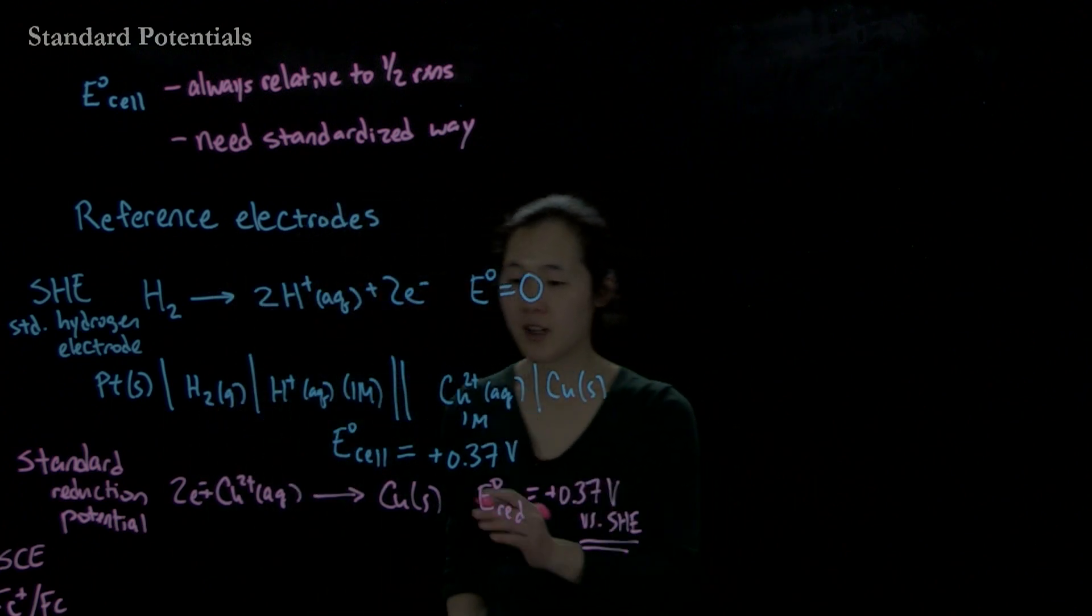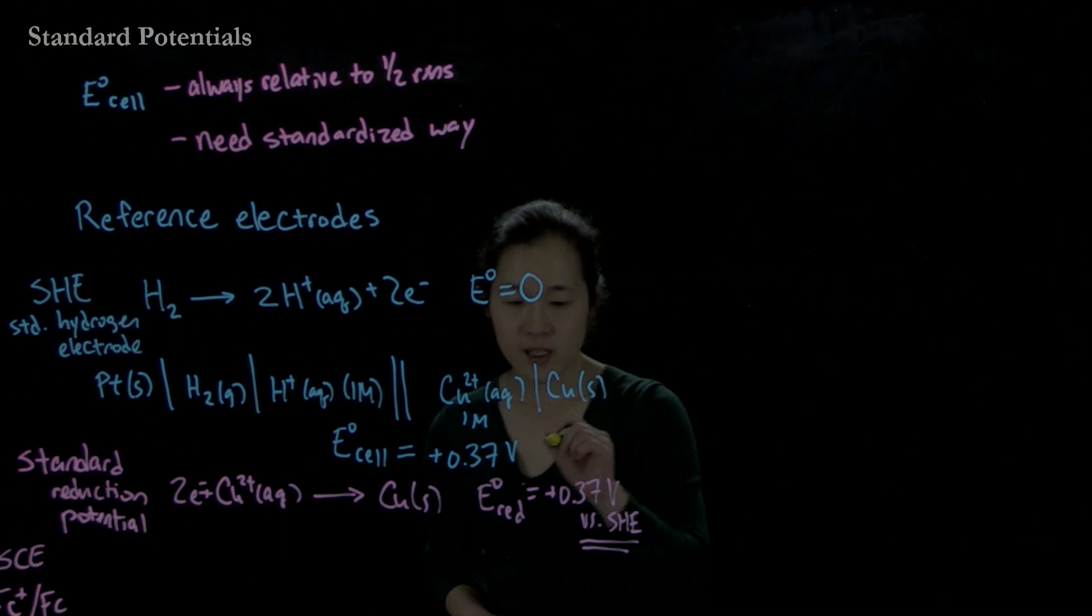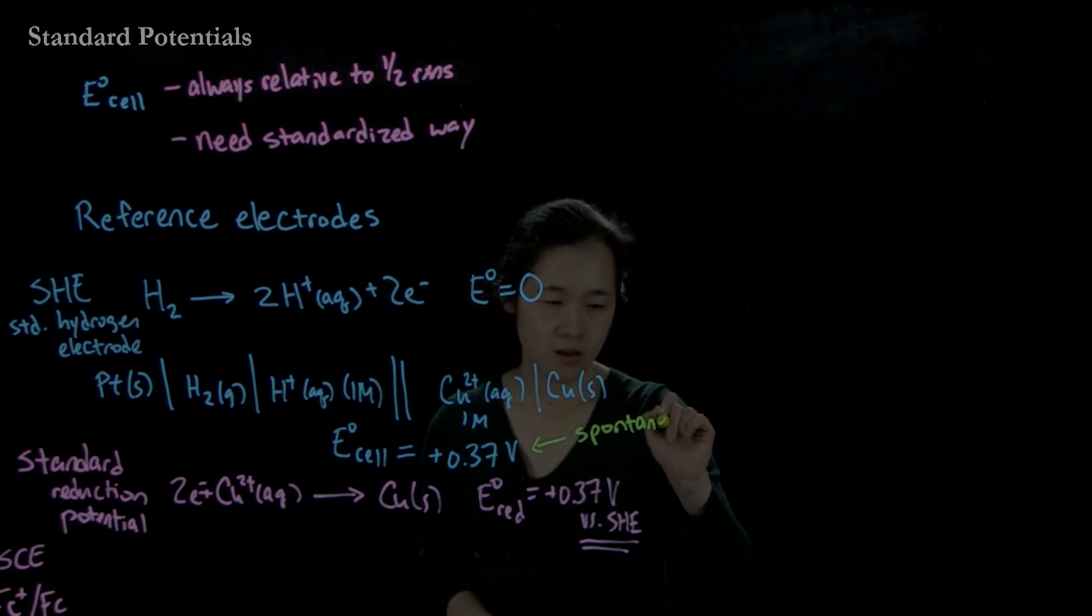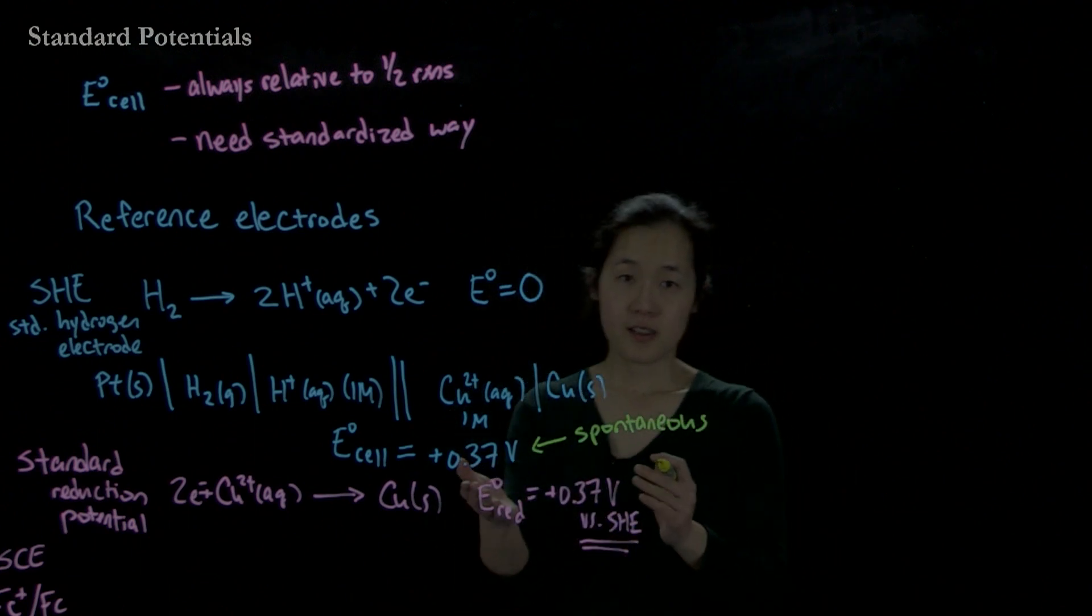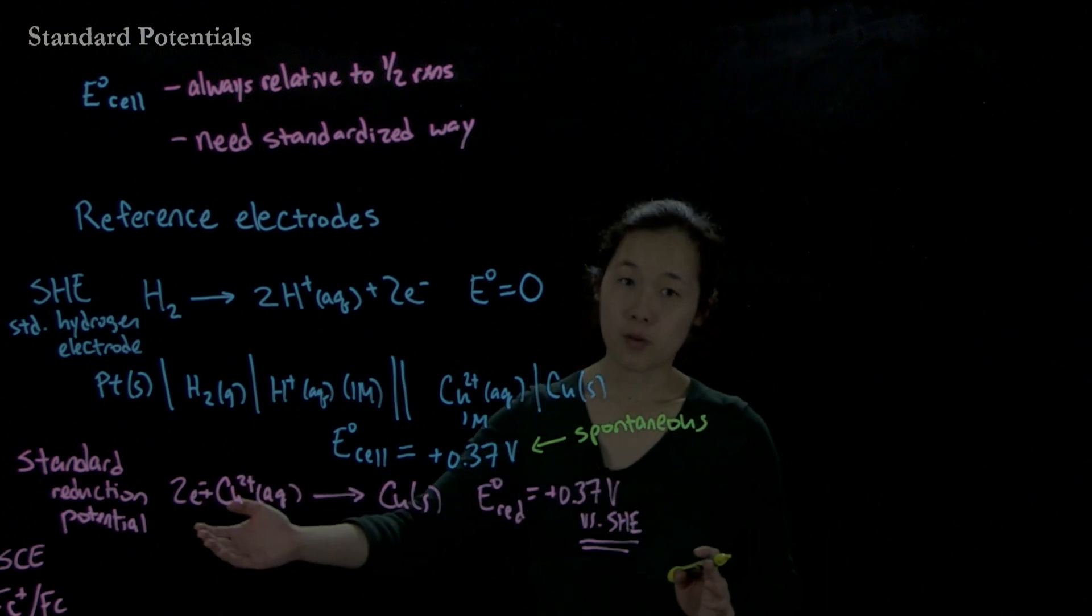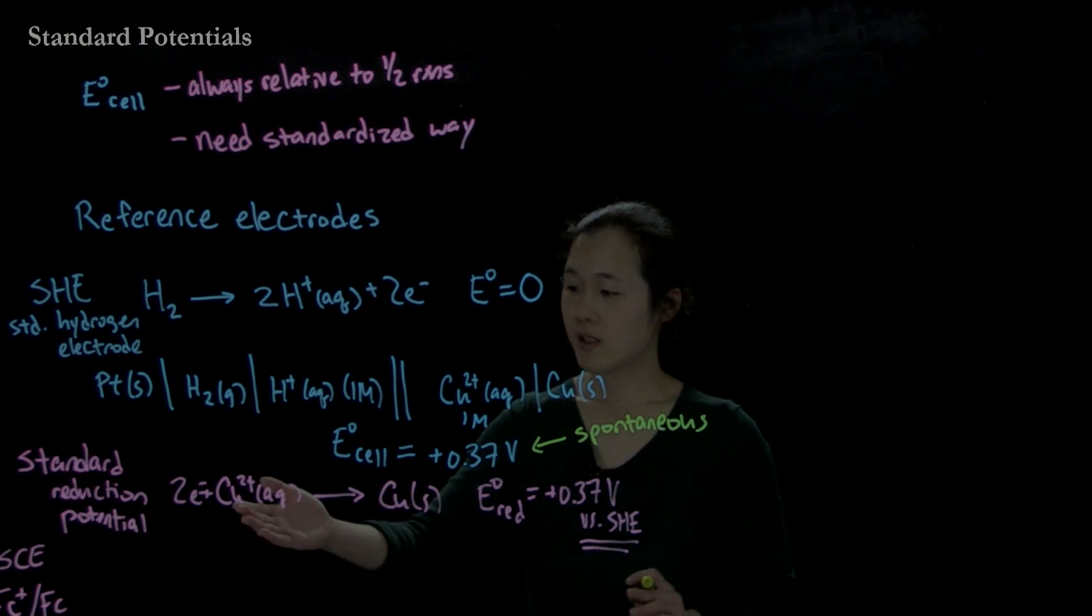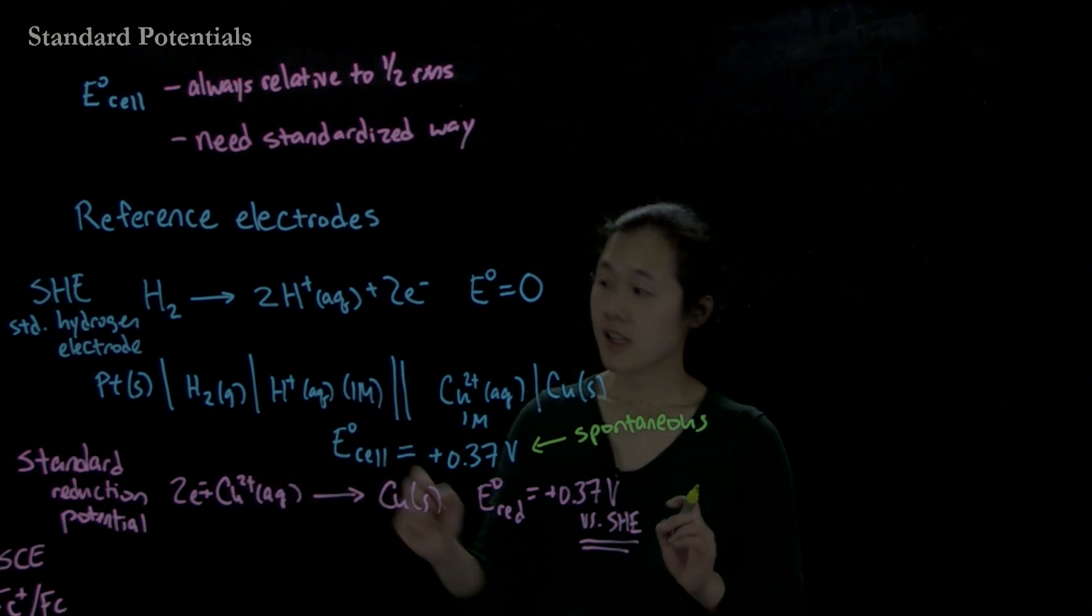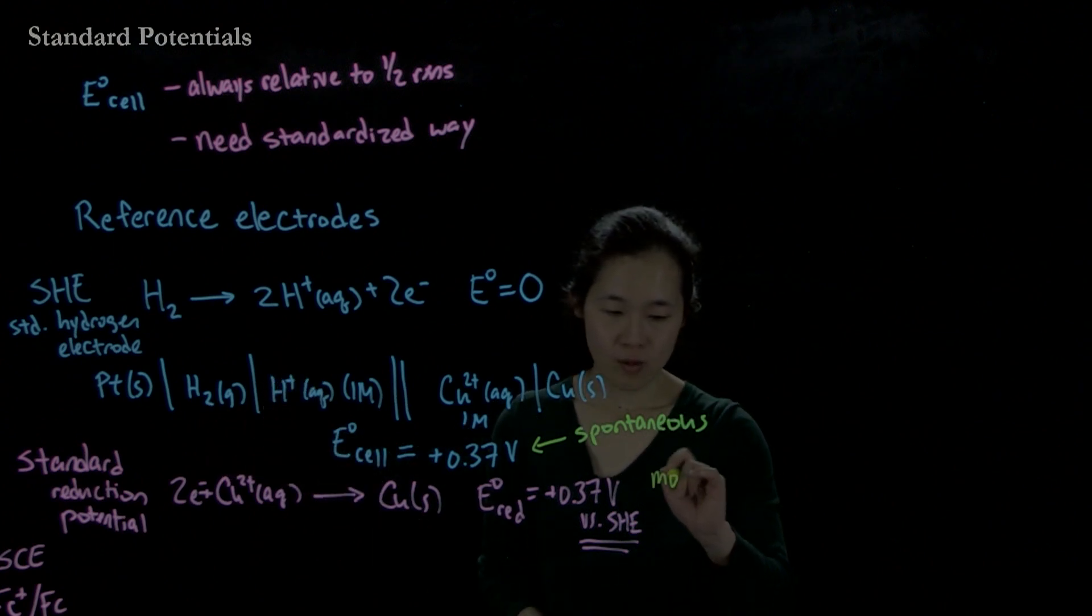One thing I remember is, if you remember that if E cell is greater than zero, we said this was spontaneous. So what this means is that the more positive it is, the more positive a reduction potential is, the more likely this copper 2 plus wants to be reduced to copper zero. So we could consider by saying this is a positive number, copper 2 plus is more oxidizing than hydrogen gas, or more oxidizing than protons. So this is more oxidizing.